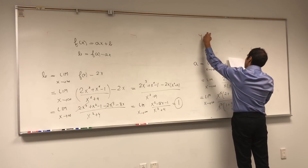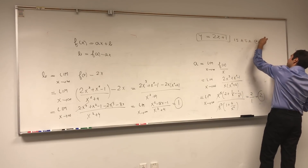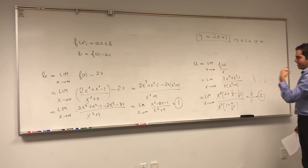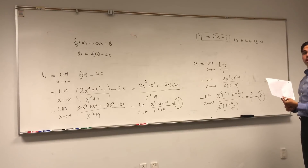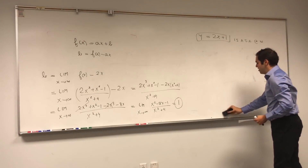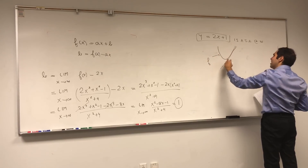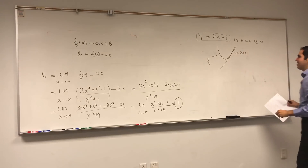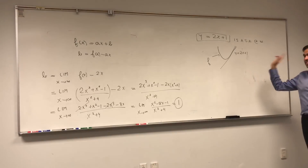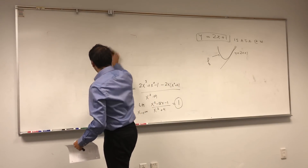Therefore, the equation of the slant asymptote is y = 2x + 1, which is a slant asymptote at infinity. At minus infinity, you do the exact same process but let x go to minus infinity — and you actually find the same asymptote. So it's a slant asymptote both at infinity and minus infinity, which means that no matter what the graph looks like, it eventually approaches the line y = 2x + 1. By the way, it's totally okay for the graph to cross that line.